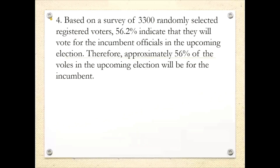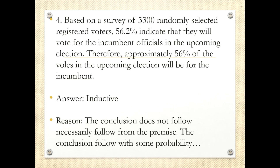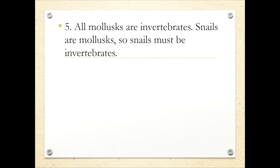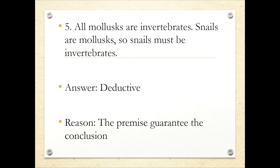Number 4: based on a survey of 3,300 randomly selected registered voters, 56.2% indicate they will vote for the incumbent officials. Therefore, approximately 56% of votes in the upcoming election will be for the incumbent. This is not a general case — it is inductive. The conclusion does not follow necessarily; it follows with some probability. Number 5: all mollusks are invertebrates; snails are mollusks, so snails must be invertebrates. We started with a general case and applied it to a specific — this is deductive. The premise guarantees the conclusion.